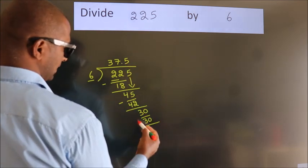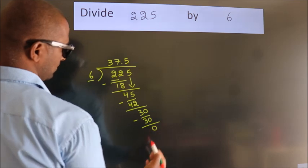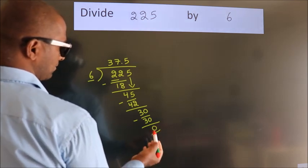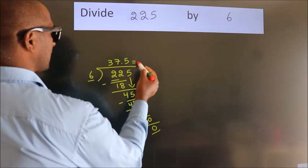Now we subtract. We get 0. Here we got remainder 0. So this is our quotient.